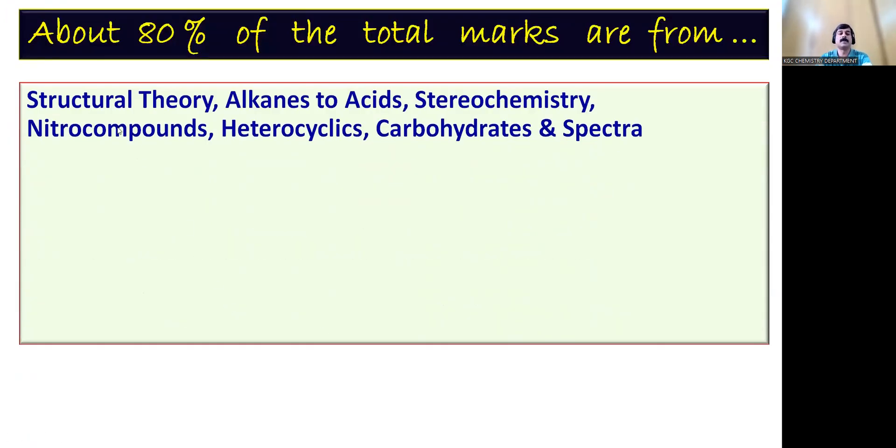About 80% of the questions, if we are looking at the analysis, about 80% of the marks are coming from the structural theory. Alkanes, alkenes, alkynes, aromatic compounds, alkyl halides. Then alcohols, phenols, ethers, carbonyls, acids. That's the sequence of compounds. Then stereochemistry, nitrogen compounds, heterocyclics, carbohydrates, spectroscopy.